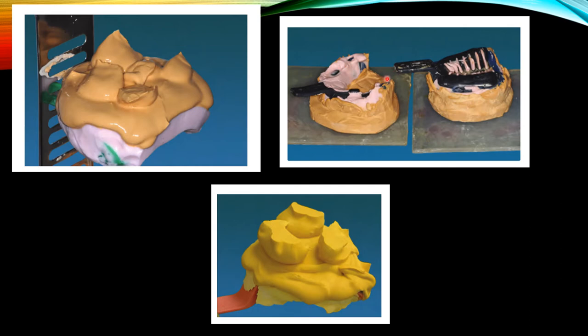Here in this picture, it shows that maxillary and mandibular preliminary impressions have been inverted into a second pour of stone to form a base for the diagnostic cast. Note that the stone on the maxillary cast has been allowed to harden while in direct contact with the impression tray — this is incorrect, and this tray will be difficult to separate from the cast.